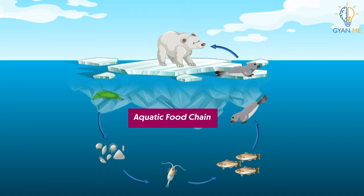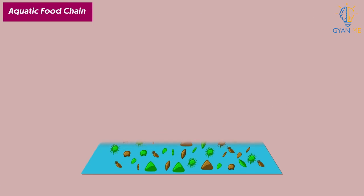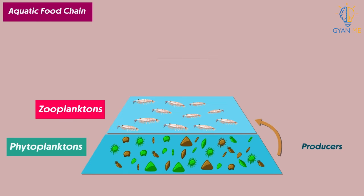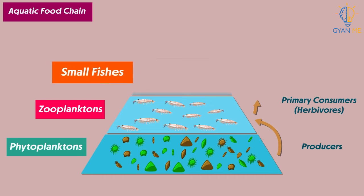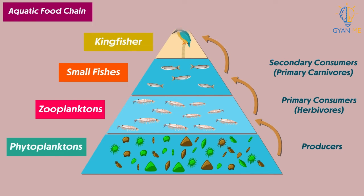Now let us see the aquatic food chain. This food chain links various organisms in aquatic habitats like oceans, rivers, and ponds. Unlike the terrestrial food chain, here the plants of water called phytoplanktons are the producers. They are eaten up by zooplanktons, which are small animals, making zooplanktons the primary consumers. The small fishes eat the zooplanktons and are called secondary consumers. Birds like kingfishers occupy the last trophic level — they are the top order carnivores of this food chain.